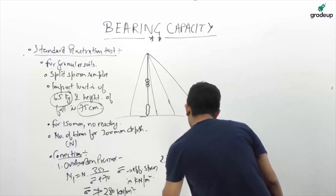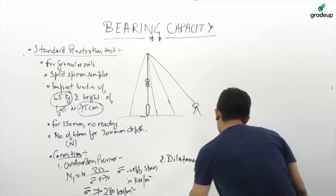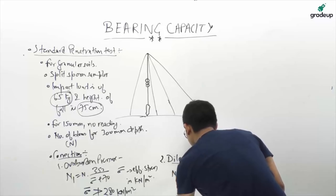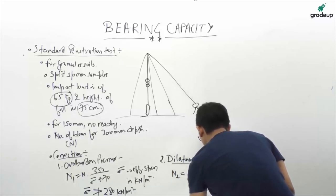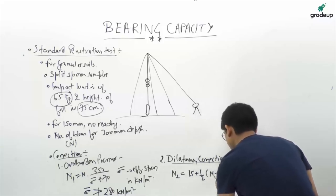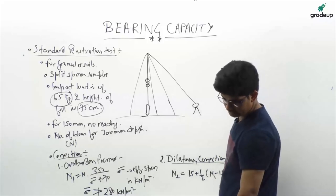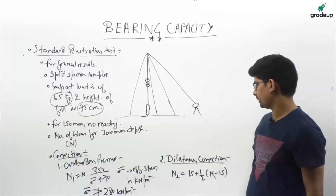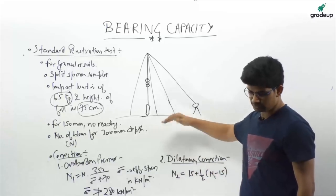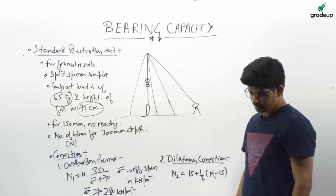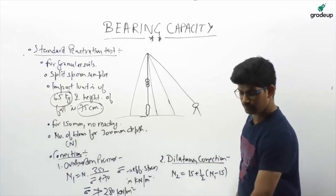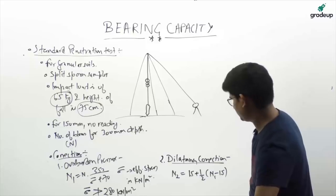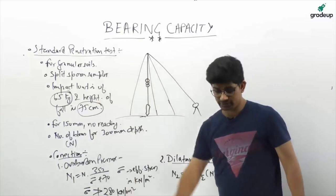The second SPT correction is the dilatancy correction for water table: N2 = 15 + 0.5(N1 − 15). If the water table is at great depth, this correction is not applied. This correction applies when the water table is close to the ground or test site.